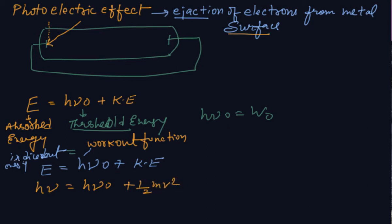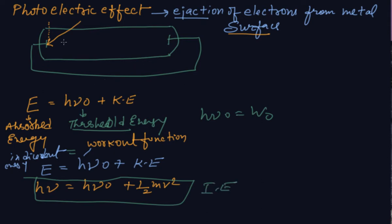This equation — E = hν₀ + kinetic energy — is known as the Einstein equation.